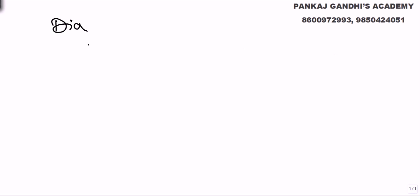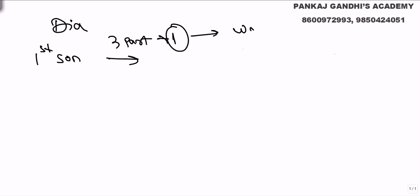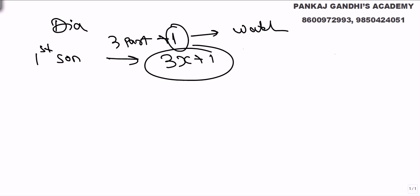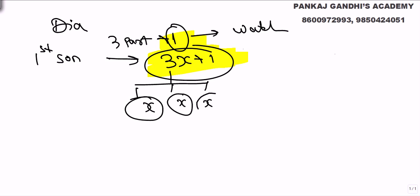The question is: Chunni bhai had a certain number of diamonds. He calls his first son and tries to divide the diamonds in three parts, but one was left out. So he gives one to the watchman. He makes three equal parts and gives one part to the first son, keeping the other two parts. This means he had a number of diamonds which was a multiple of three plus one.